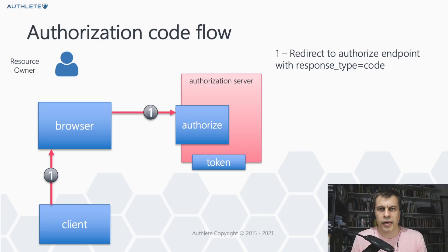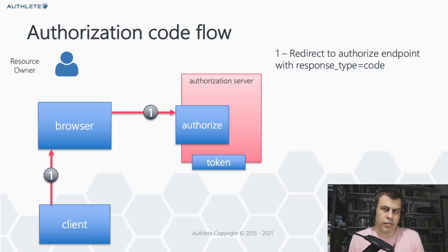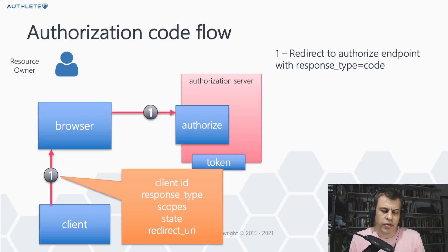The implied context of the authorization code flow before starting is that the resource owner and the client are interacting. In order for the client to have access to the protected resource, it's going to create a request and send the resource owner's browser to the authorization endpoint of the authorization server. The request from the client will be a 302 redirect to the authorization server, with all the parameters sent on the URL.